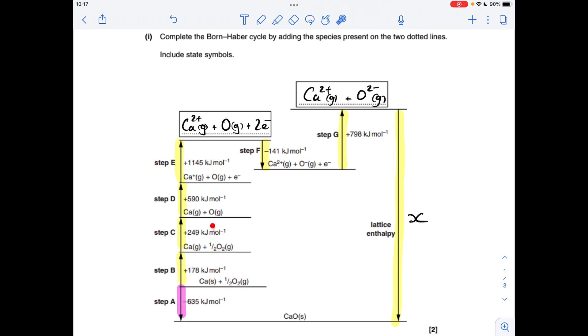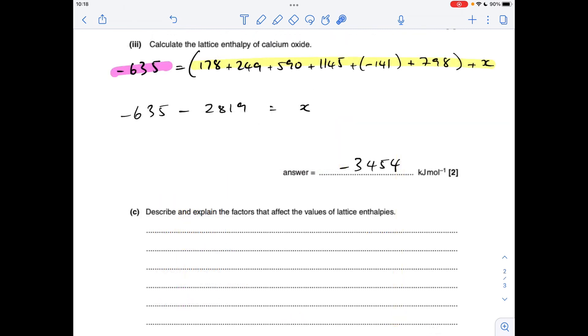So basically the sum of all of these steps, including this unknown lattice enthalpy, is equal to this minus 635. So all we need to do is put the numbers in and solve for X. So you should get a lattice enthalpy of minus 3454 kilojoules per mole.